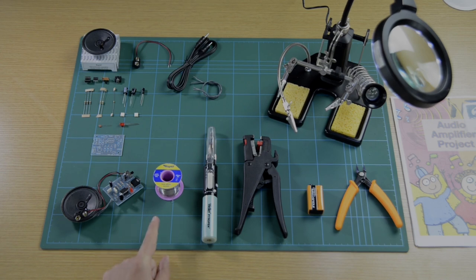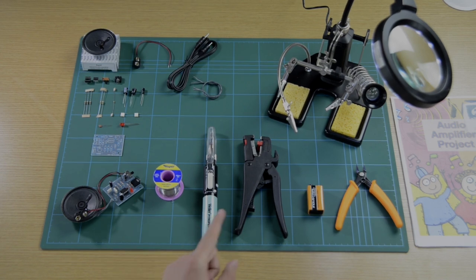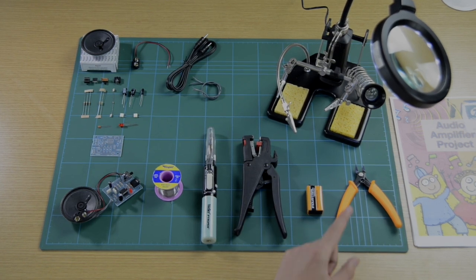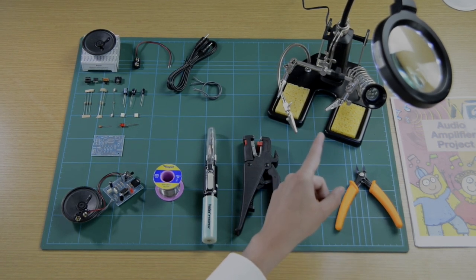You're also going to need some solder wire and a soldering iron, some wire strippers, a battery, some side snips and a helping hand for holding your PCB.